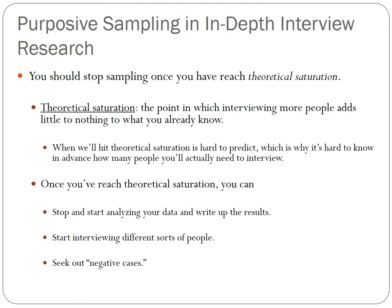Purposive sampling ends once the researcher reaches a point of theoretical saturation — the point at which sampling more cases teaches the researcher little to nothing new about the particular research question. When theoretical saturation will occur is very hard to predict. You have to play it by ear and analyze your data as you go, so that you will know when every other interview you do is teaching you less and less — sometimes nothing new — about what you're trying to find out.